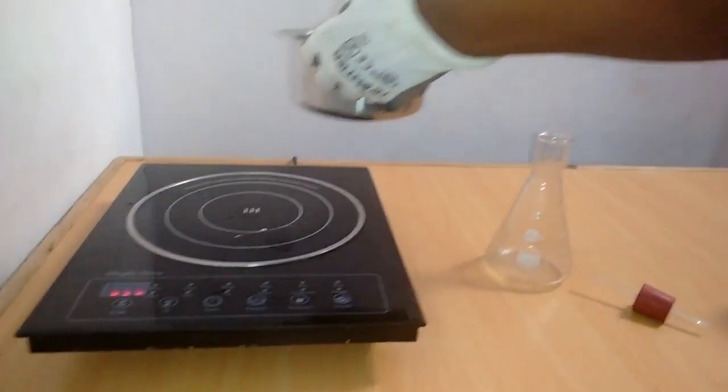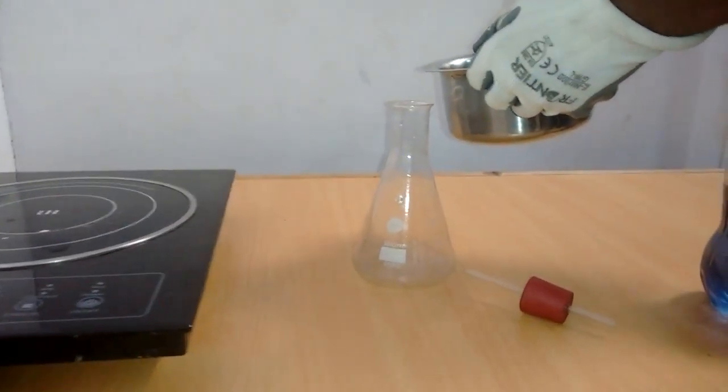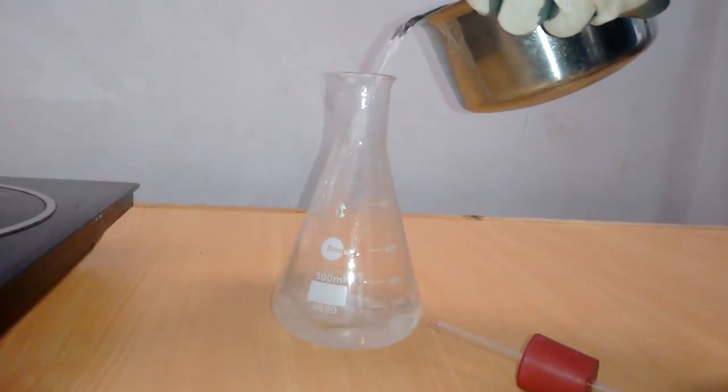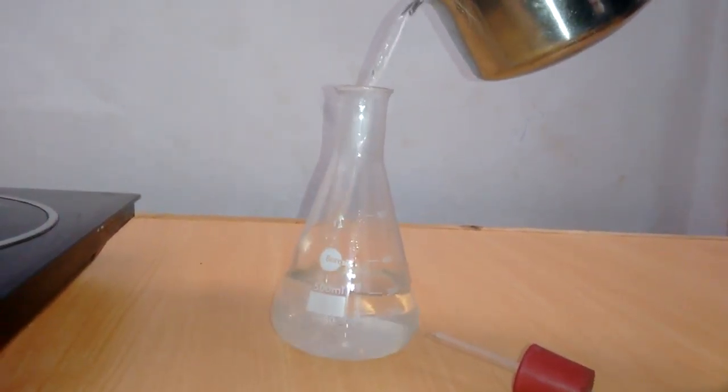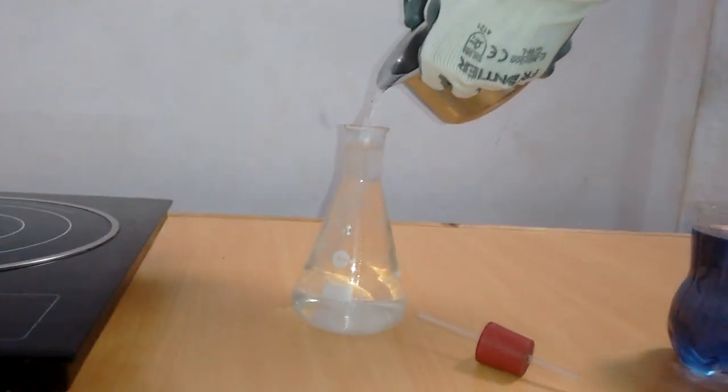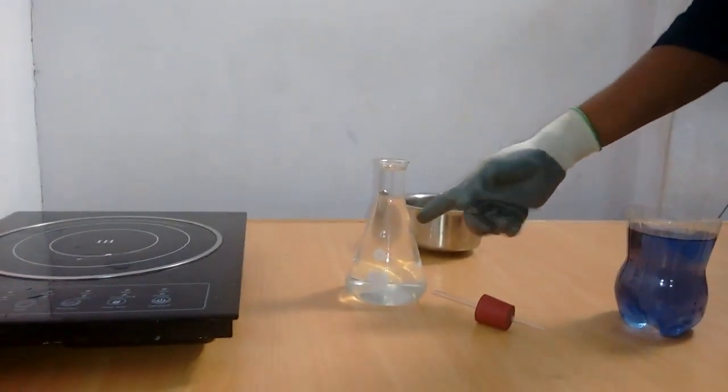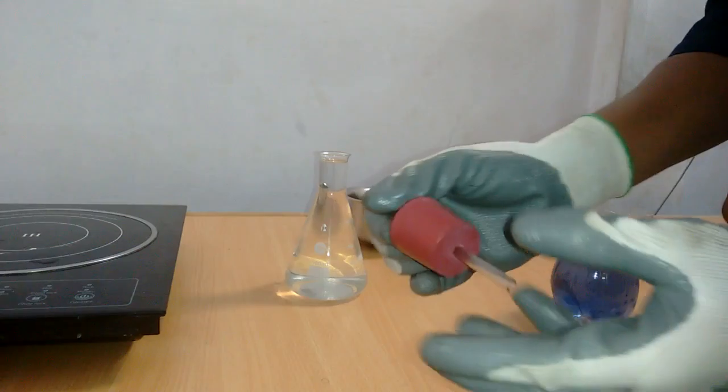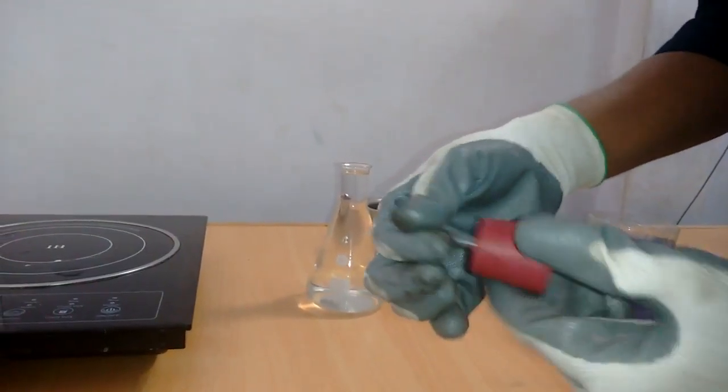Now just pour the hot water into a conical flask. Keep the water in the conical flask for a few seconds. This is a rubber stopper and we have put the glass tube in it.